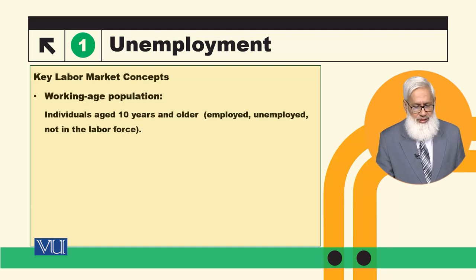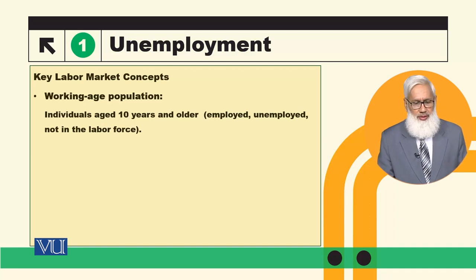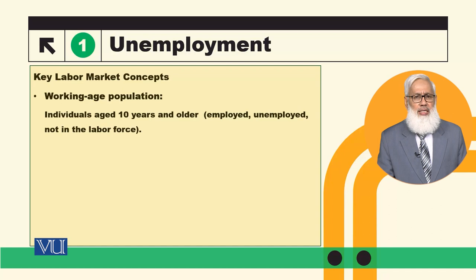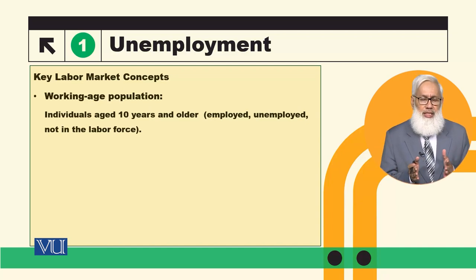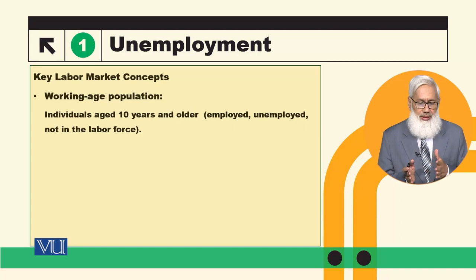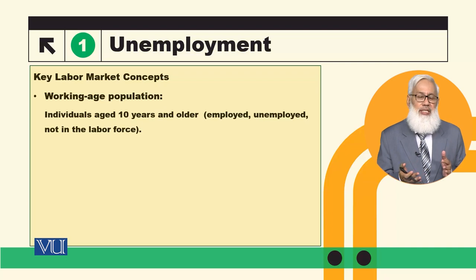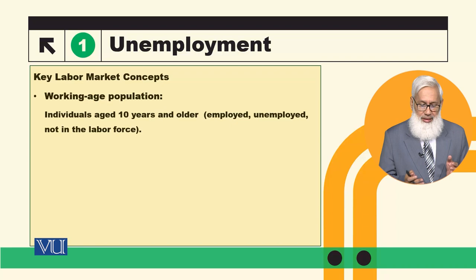Working age population mein teen tarah ke loog hamare paas hoongay. Number one, employed, unemployed, and yeh doono — employed aur unemployed milke — hamari labor force banti. So working age population ko samajhna chahein toh, is mein doo parts hain: labor force and the individuals who are not in labor force. And labor force can further be classified between employed and unemployed.